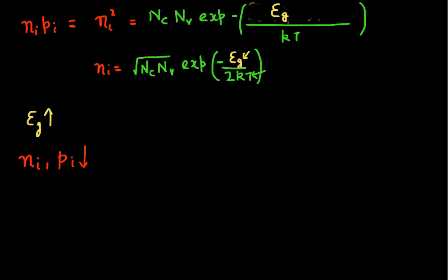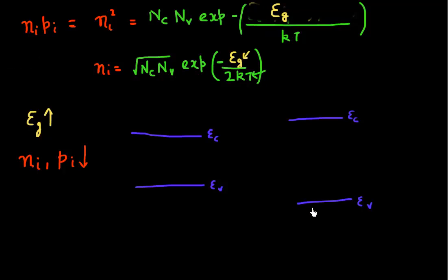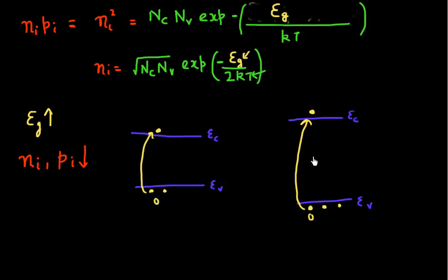If I'm increasing my band gap—comparing two semiconductors, one with a lower band gap and one with a higher band gap—I am increasing the barrier for electrons in the valence band to jump over to the conduction band and create a hole. When I have a low band gap, there is a decreased barrier for these valence electrons to jump over and become conduction electrons, correspondingly creating holes. So it makes sense: increasing the band gap increases the barrier for valence electrons, reducing the number of electrons and holes.